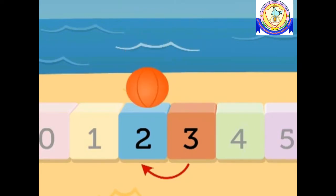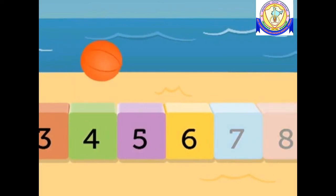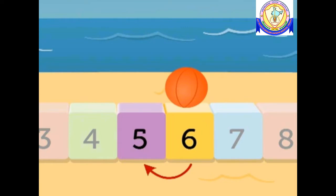Number two — thus two comes before three. Where is the ball now? It is on number six. Which number will you get when you count one number backwards?